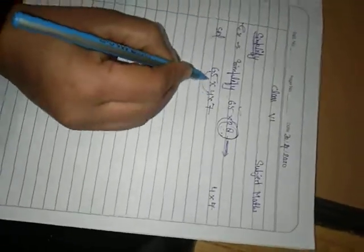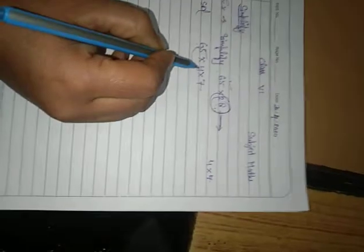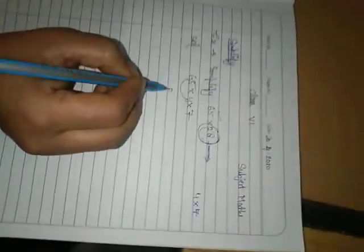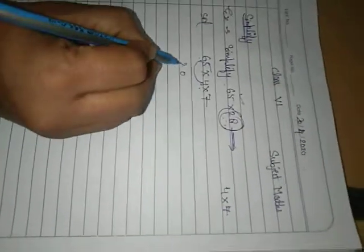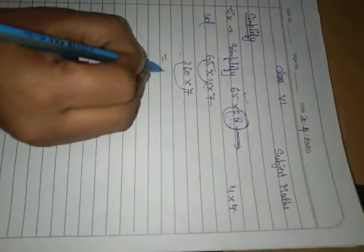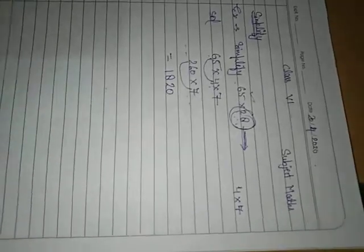Now 65 multiply by 4. So 4 times 5 is 20, carry 2. 4 times 6 is 24 plus 2 equals 26, giving us 260. Then 260 multiply by 7 equals 1820. I hope you have understood this one.